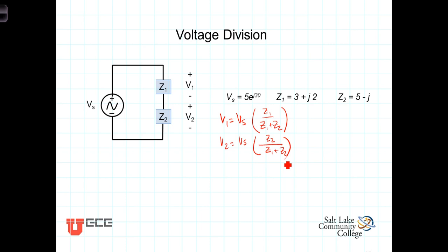Of course, it's pretty easy to show that V1 plus V2 equals Vs. So what we're saying is that you've got a total of Vs dropped across there. Z1 over Z1 plus Z2 times Vs is V1, or V1 is proportional to Z1. And V2 is equal to Vs times Z2 over Z1 plus Z2.